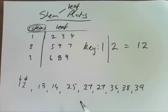That way you're 100% sure that the person reading your stem plot knows that when you have a 1 there and a 2 there, it's equal to 12.